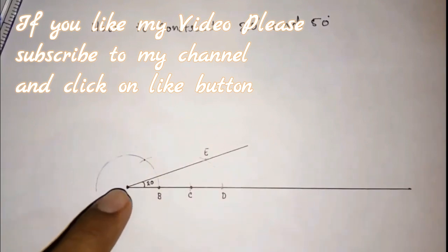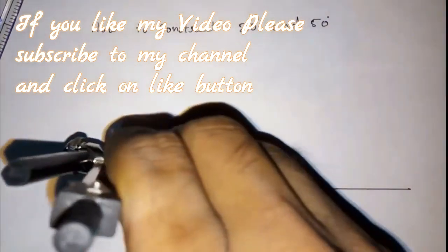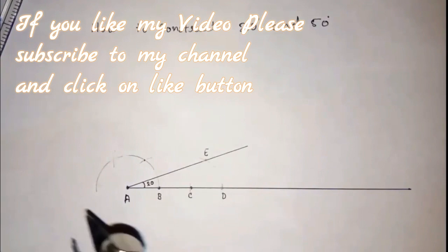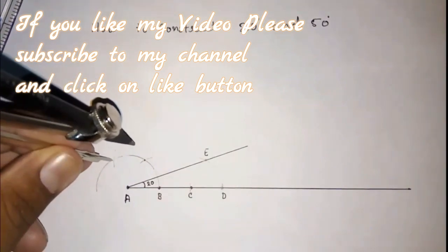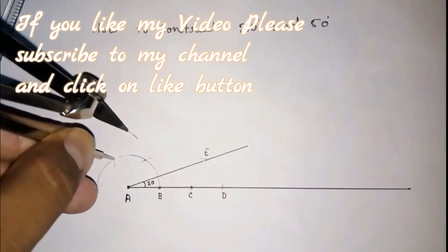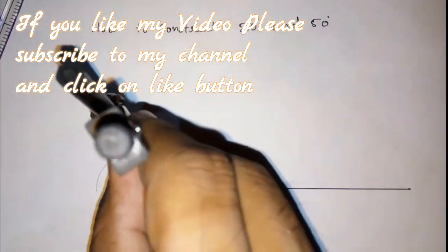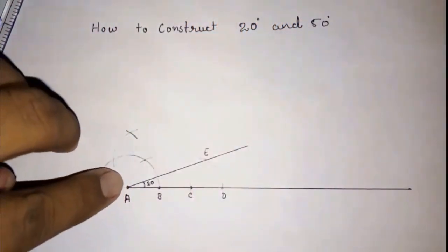For constructing 50, first we have to construct 90 also. So how am I going to construct? This is 60. Then again an arc. This is 120 arc. From 120, this is 90. I had explained in my previous video, still I am doing it here so that you know. This is 90.